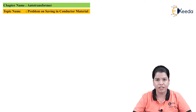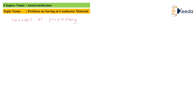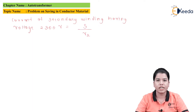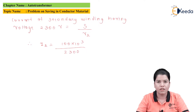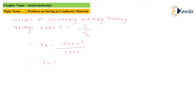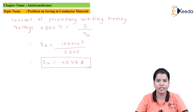Similarly, the current at the secondary winding having voltage equal to 2,300 volts is I2 equal to S divided by V2. Substituting the values, I2 is equal to 100 multiplied by 10 raised to 3 divided by 2,300. Solving this equation gives I2 equal to 43.48 ampere.